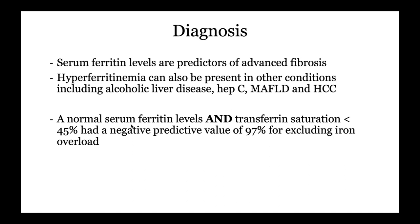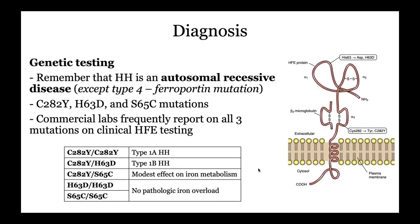If you have a normal ferritin and a T-sat less than 45%, this essentially excludes hemochromatosis — it has a negative predictive value of about 97% for iron overload. After sending those, the next step is genetic testing. It's important to understand what certain mutations mean. Hereditary hemochromatosis is an autosomal recessive disease, except for type 4 — the ferroportin mutation — which is autosomal dominant and very rare, potentially causing juvenile hemochromatosis.